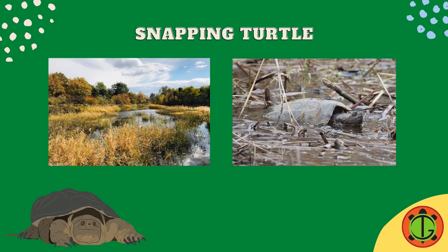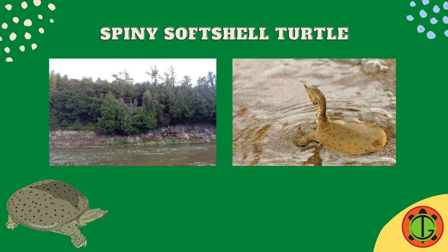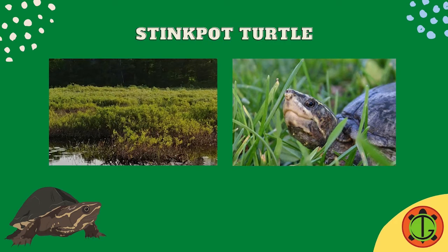Snapping turtles are also generalists. They can be found in many diverse habitats from lakes to ponds and marshes. The spiny softshell turtle is a highly aquatic turtle that rarely travels far from water. They like to live in slow-moving muddy rivers and at the bottom of bays. The stinkpot turtle, otherwise known as the musk turtle, is one of Ontario's smallest turtles. They are also highly aquatic and are rarely seen basking out of the water. They can be found in shallow bays of lakes, hiding under water lilies, in ponds, marshes, and streams.